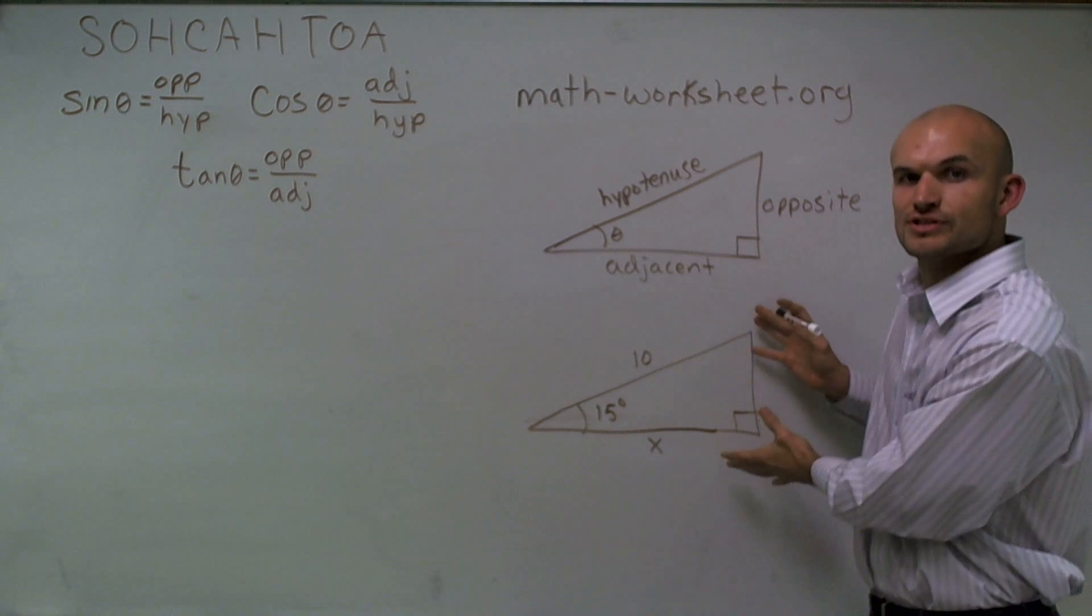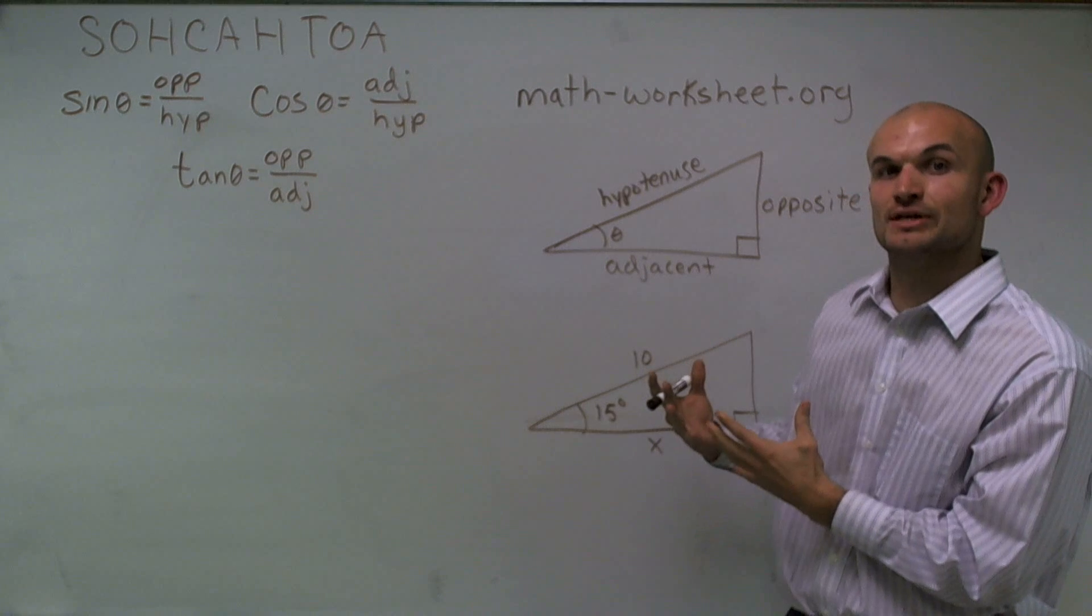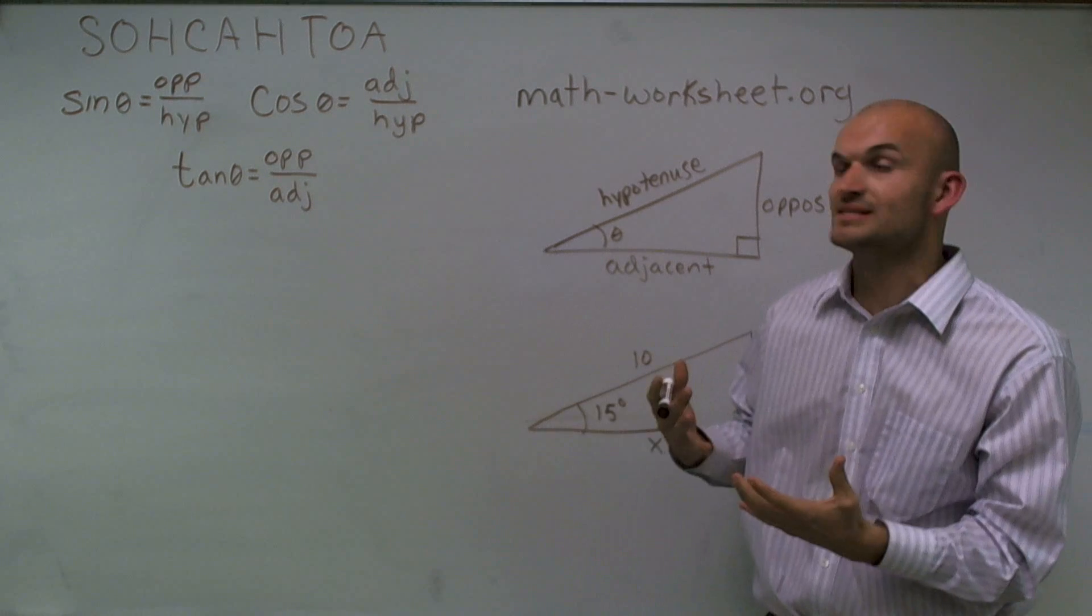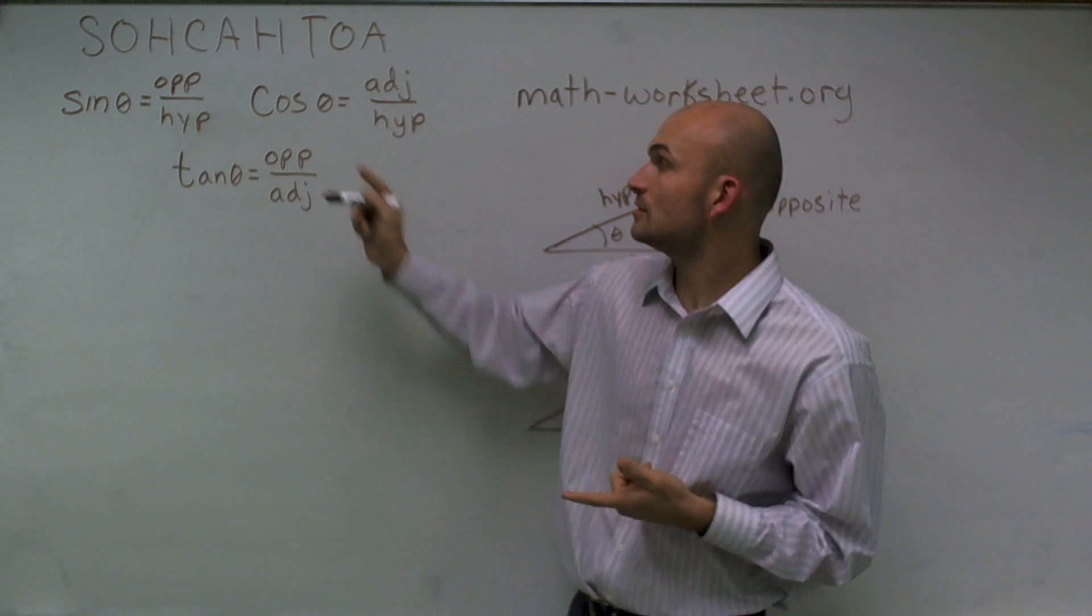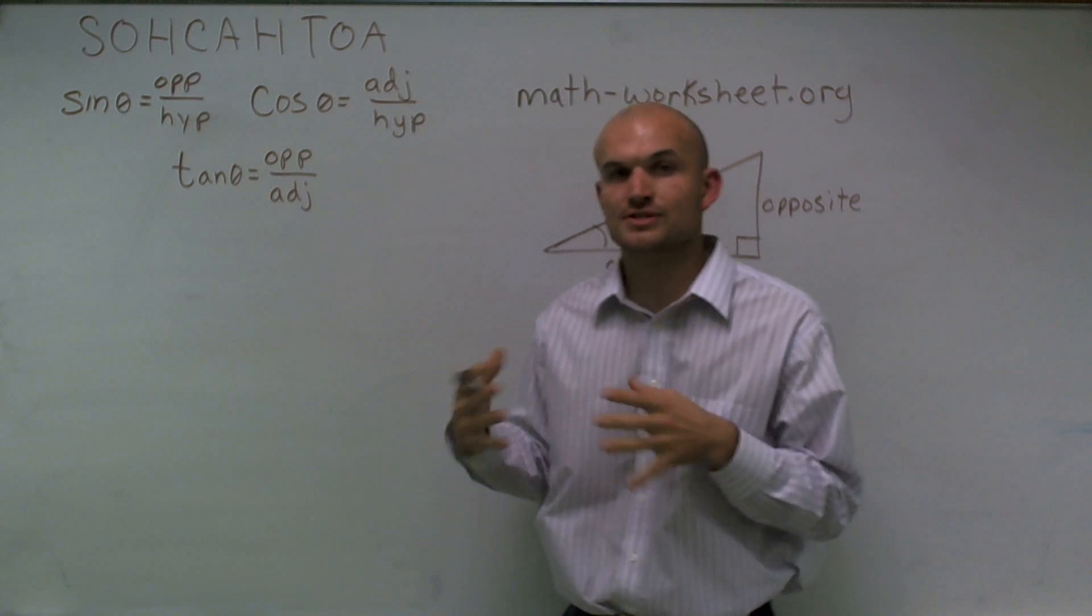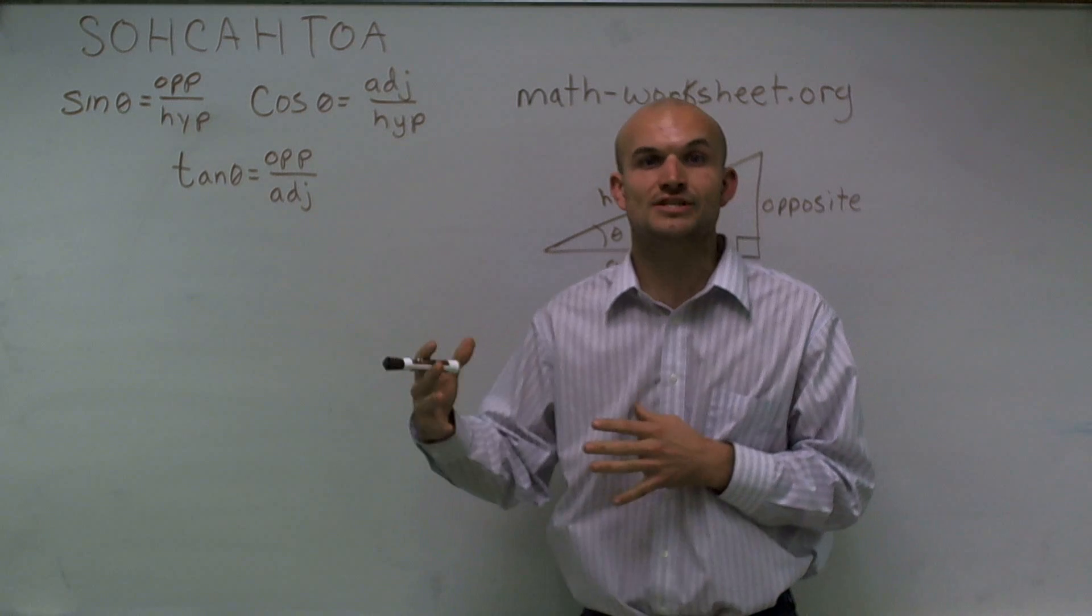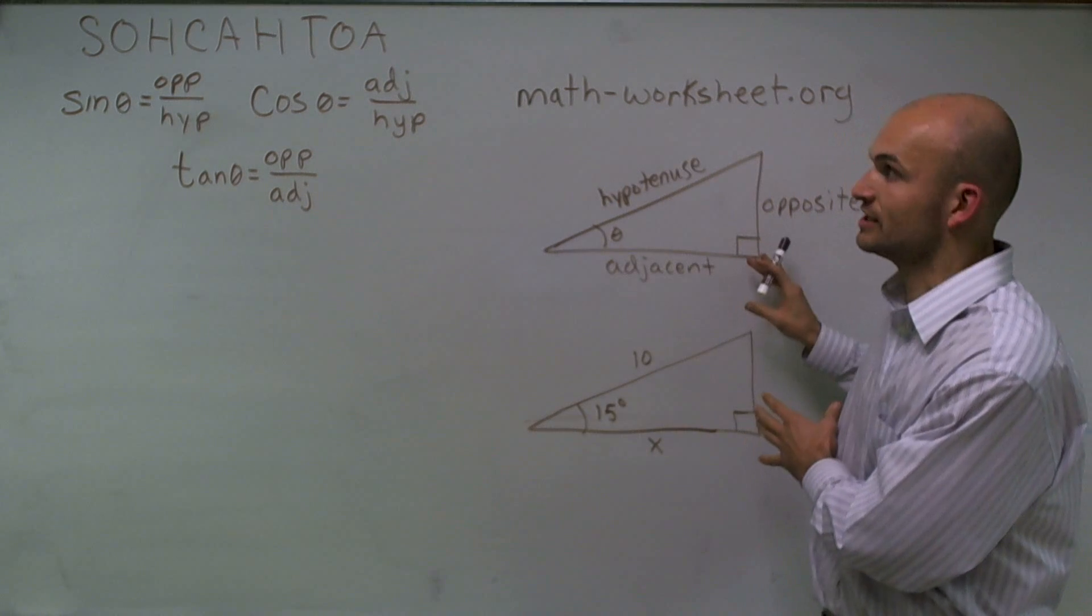Now, when using right triangle trigonometry, we have some functions that we can use to solve for our missing side lengths. And that's where we have our sine, cosine, and tangent. Now, these are all functions that are going to use the ratios of our side lengths that are given our triangle.